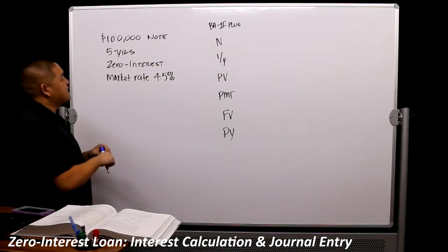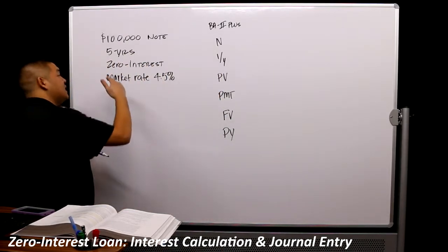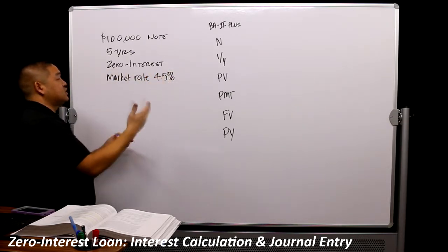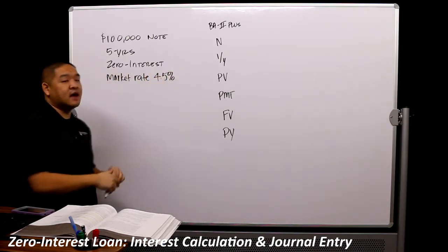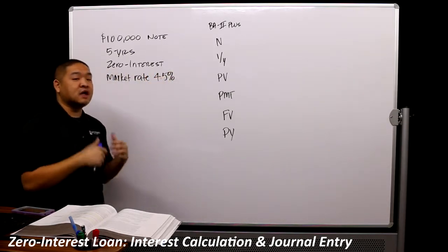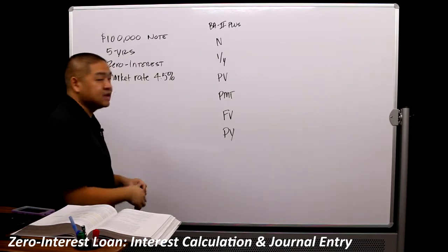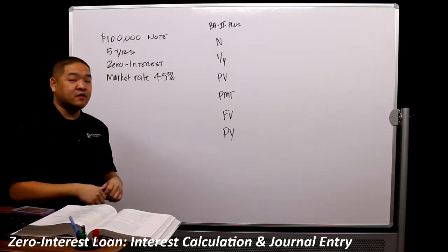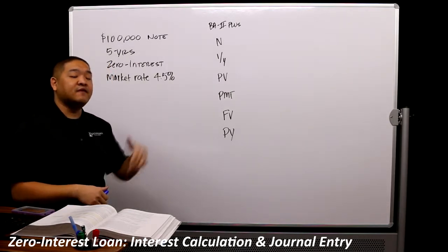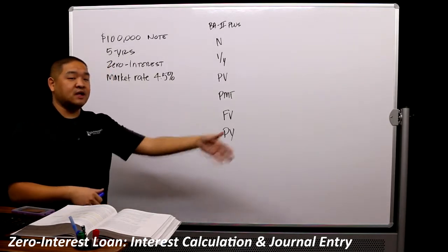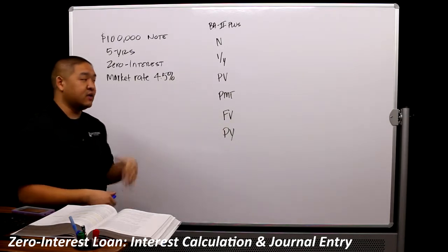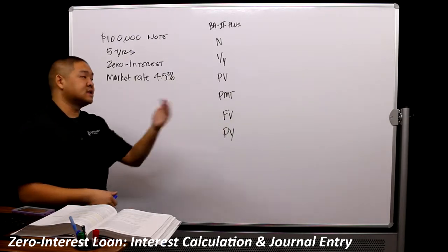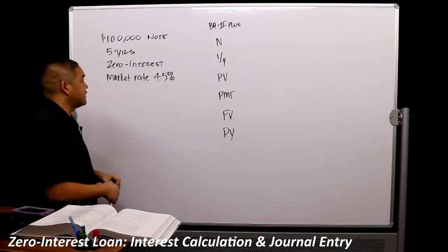GAAP tells us that we can't just have a 0% interest rate. We can't put this equipment into our books for $100,000 without some interest tied to it, because of the time value of money — future value money is not the same as present value money; what it's worth a year from now is not the same as what it's worth today.